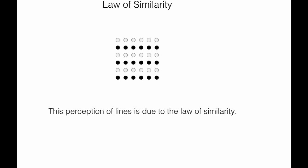Now let's move on to law of similarity. This law states that if you perceive objects which are similar to each other, then you think that they are actually grouped together. For example, in this diagram, you can see that there are black circles and white circles.